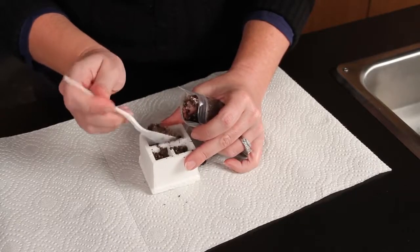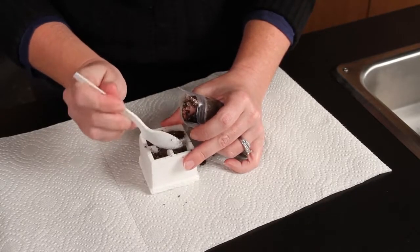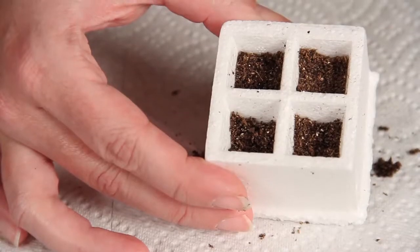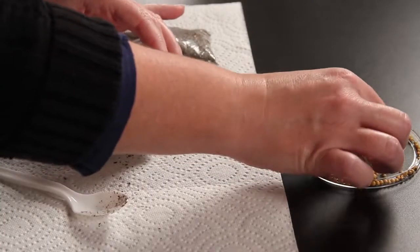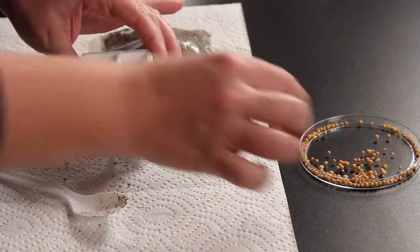Loosely fill each cell with the moistened soil about halfway. Add 3 fertilizer pellets to each cell.